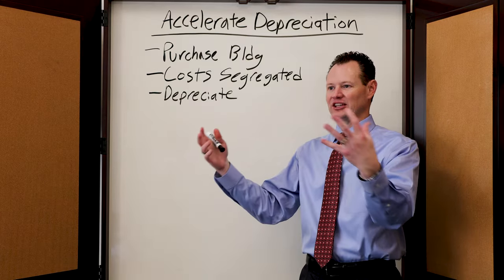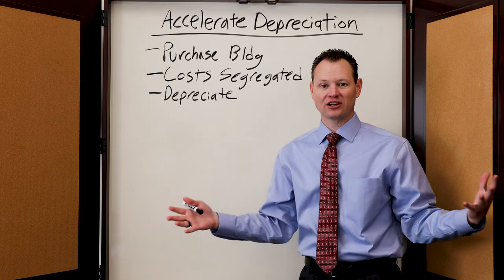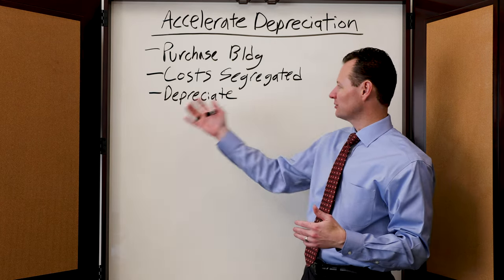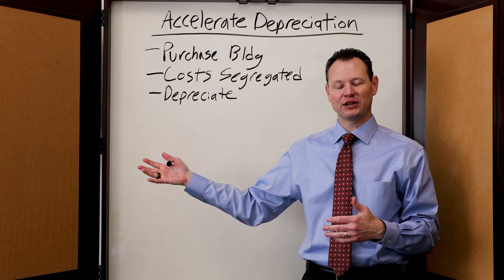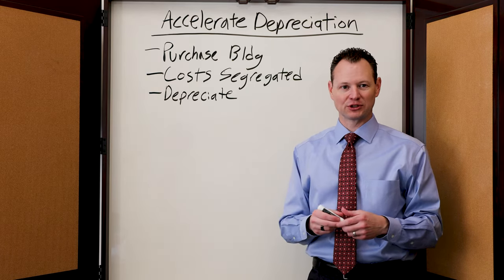If you buy a million dollar building and $50,000 worth of that building is in five year property, you can depreciate $50,000 of that purchase price over a five year period rather than over a 39 year period if it's a commercial building.